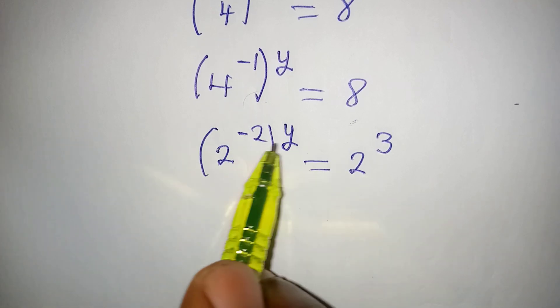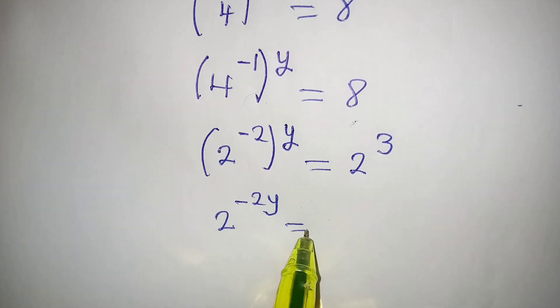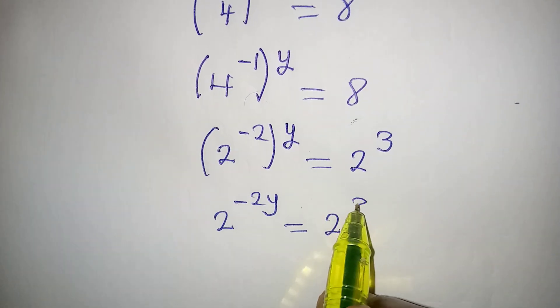Then we can open these brackets, so we have 2 to the power of negative 2y, which will be equal to 2 to the power of 3.